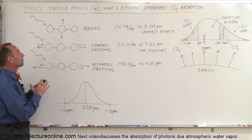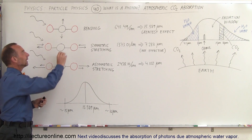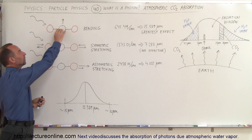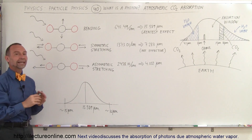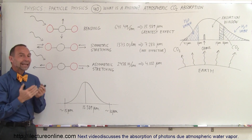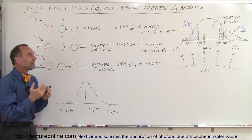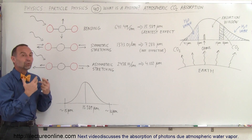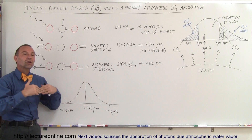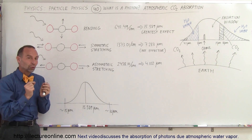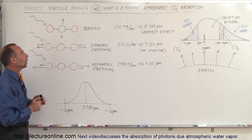A carbon dioxide molecule is what we call a linear molecule. It has one carbon in the middle and two oxygen on the ends. It's a linear molecule and it has three ways in which you can absorb energy by causing natural vibrations in three different ways.